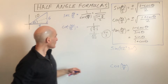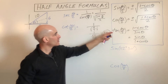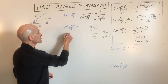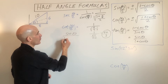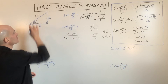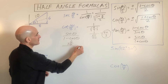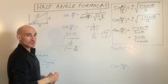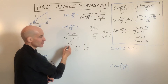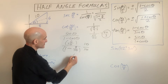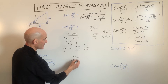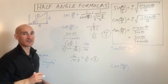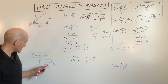Next: cotangent of θ/2. Cotangent is the reciprocal of tangent, so we flip the tangent half-angle formula to get sine θ over (1 − cos θ). Sine θ is opposite over hypotenuse, which is 6/10, and 1 minus cosine θ is 1 minus 8/10. Multiplying numerator and denominator by 10 clears the denominators: we get 6 over (10 − 8), which is 6 over 2, equaling 3.